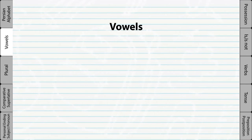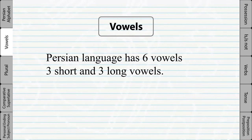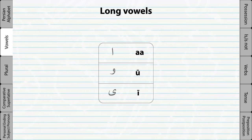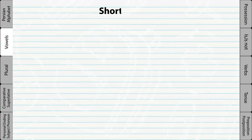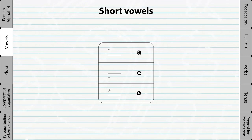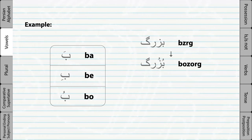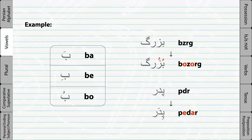Vowels. The Persian language has 6 vowels: 3 long vowels and 3 short vowels. The long vowels are shown here, and these are the short vowels in Persian. The short vowels are attached to other letters and cannot appear alone. Most of the time, the short vowels are not written in Persian, thus making it hard for foreigners to read words correctly. That's why it's important to pay close attention to short vowels when you learn a new word.